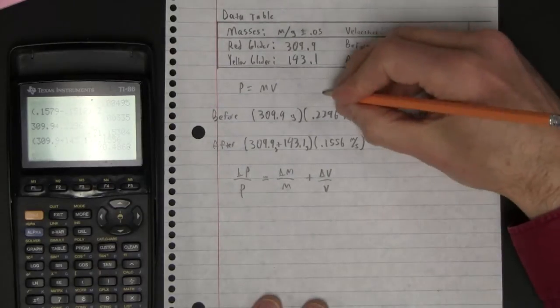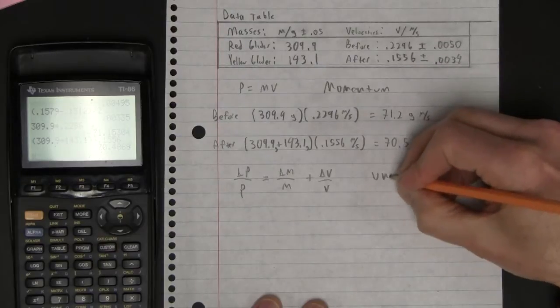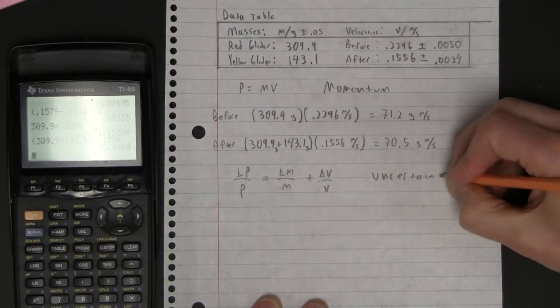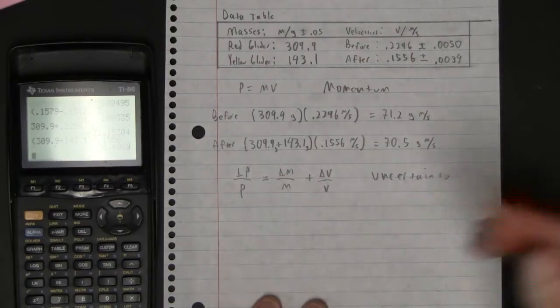So if we calculate, here is momentum, here is uncertainty. Okay, so let's do this.